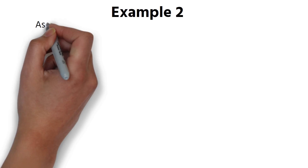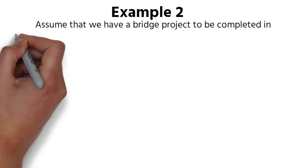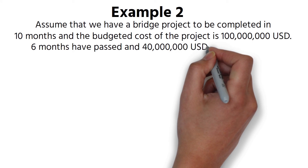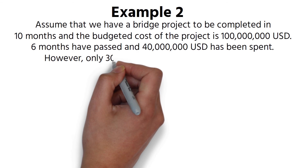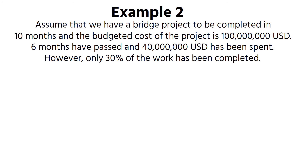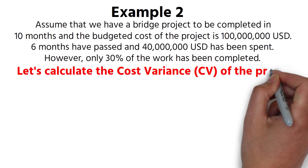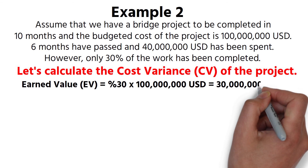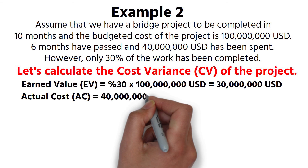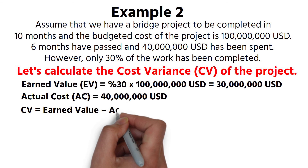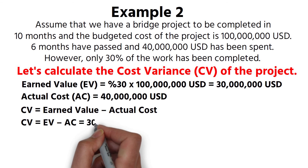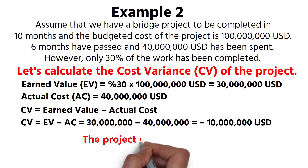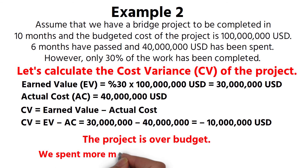Example 2. Assume that we have a bridge project to be completed in 10 months and the budgeted cost of the project is $100 million US dollars. Six months have passed and $40 million US dollars has been spent. However, only 30% of the work has been completed. Earned Value = 30% × $100 million = $30 million. Actual cost = $40 million. CV = EV − AC = $30 million − $40 million = −$10 million US dollars. The project is over budget. We spent more money but we completed less work. In order to make efficient cost control, we need to check resource productivity correctly.